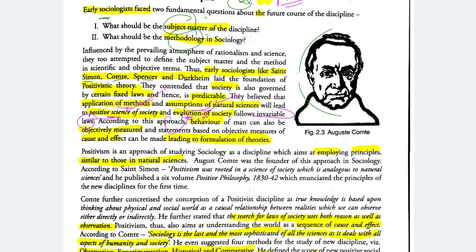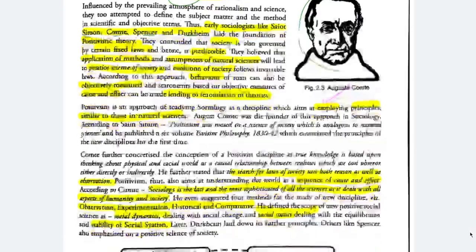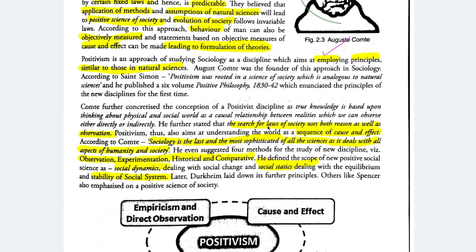This positivist approach says that the behavior of man is objectively measured — there is no subjectivity. Objectivity means you can be unbiased and study without any preconceived notions. Statements based on objective measures of cause and effect can be made, leading to the formulation of theories. Sociology as a discipline aims at employing principles similar to those in natural sciences. Comte contended that the search for laws of society uses both reason as well as observation. Positivism aims at understanding the world as a sequence of cause and effect.